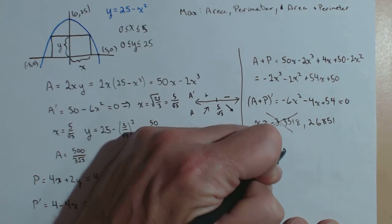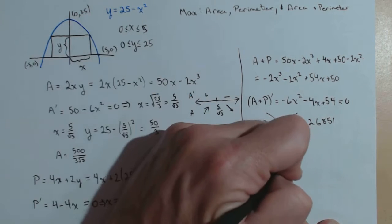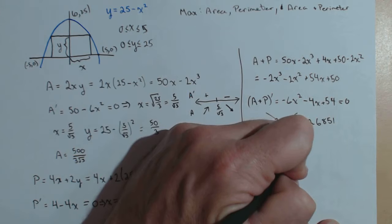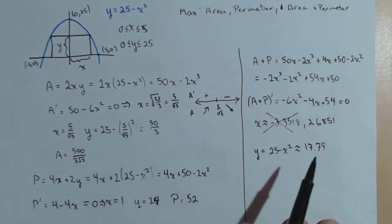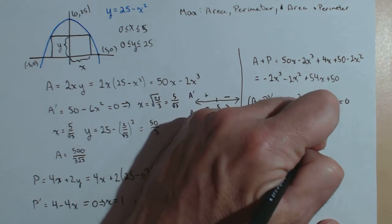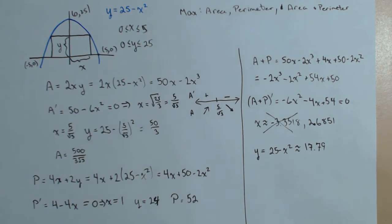Well, remember y is 25 minus x squared. That's our constraint, which as a decimal is approximately, well, I'll just go to two decimals on this one, 17.79. So those are the dimensions of the rectangle that would give the largest sum of area plus perimeter.